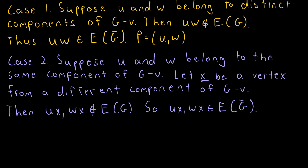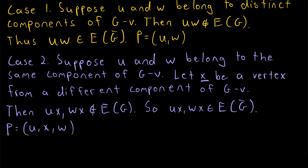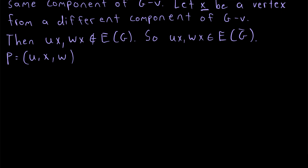Since UX and WX are elements of the edge set of G complement, there exists a path P connecting U and W that doesn't contain V. We can go from U to the adjacent vertex X, and since X is also adjacent to W, we go from X to W. There is a UW path in G complement that doesn't contain V, so deleting V cannot disconnect U and W.